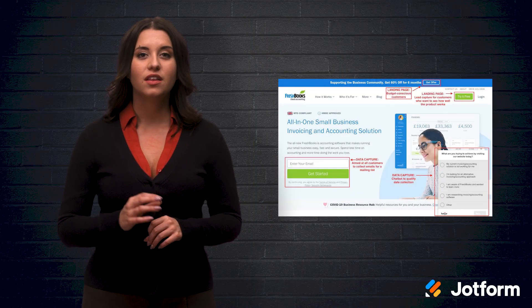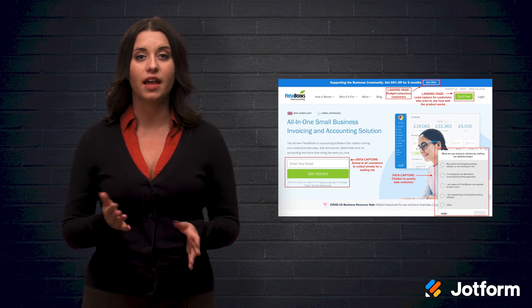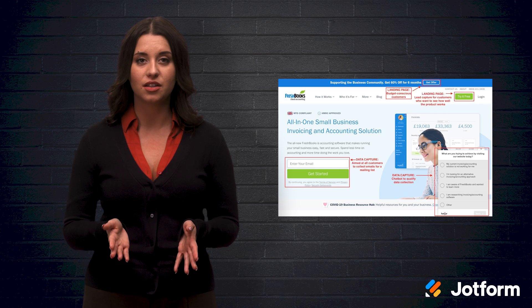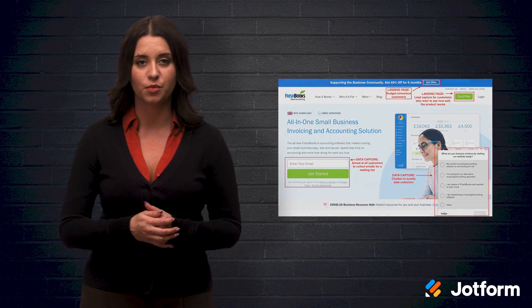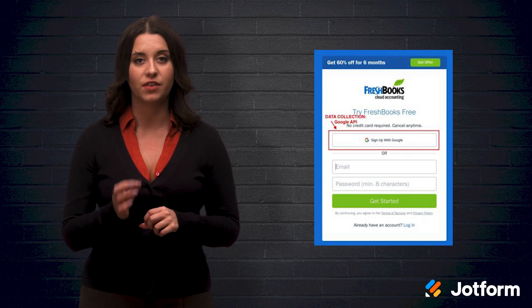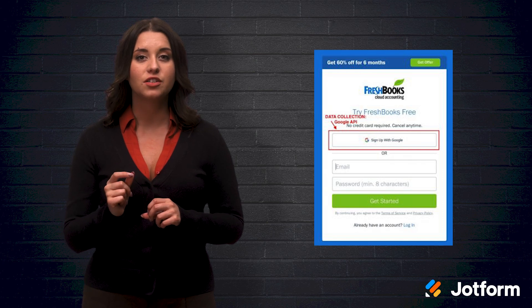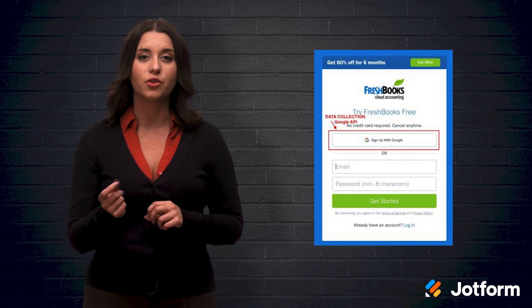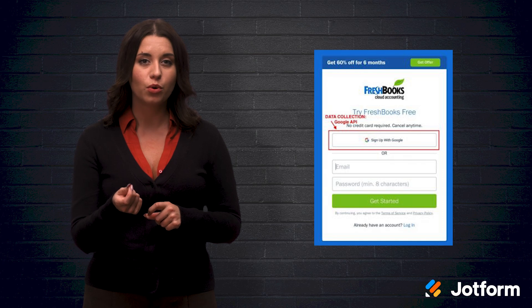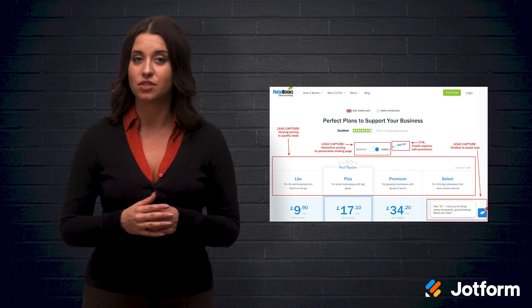Now let's look at the invoicing software FreshBooks. They use multiple pages to capture data. They use the home page as the landing page with an automated data collection form aimed at potential customers. The free trial landing page targets customers concerned with the platform's efficacy. The get offer landing page offers interactive pricing to personalize the customer experience geared toward more price-conscious clients. And finally, payment landing pages are used as a direct call to action while collecting personal data.